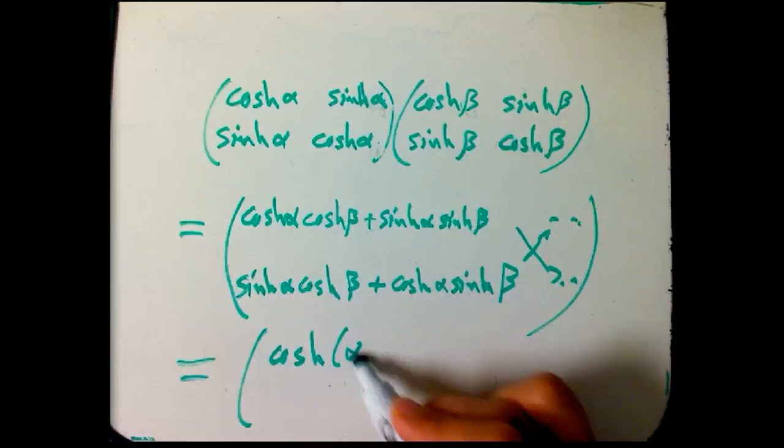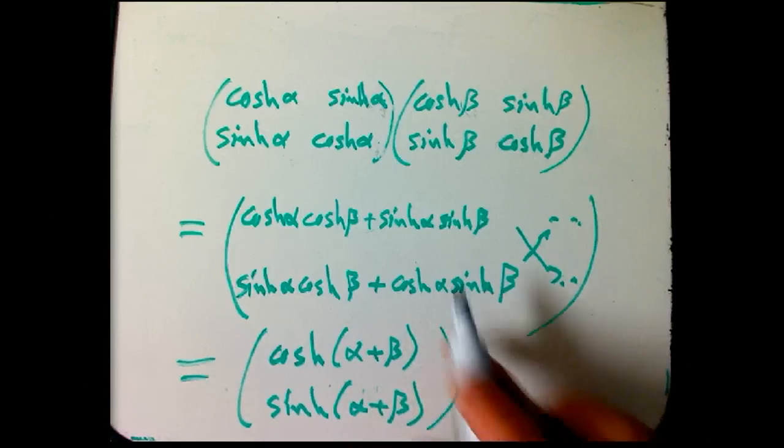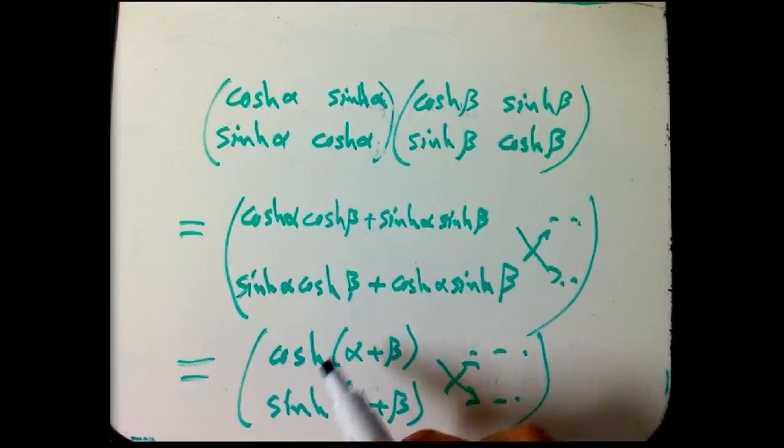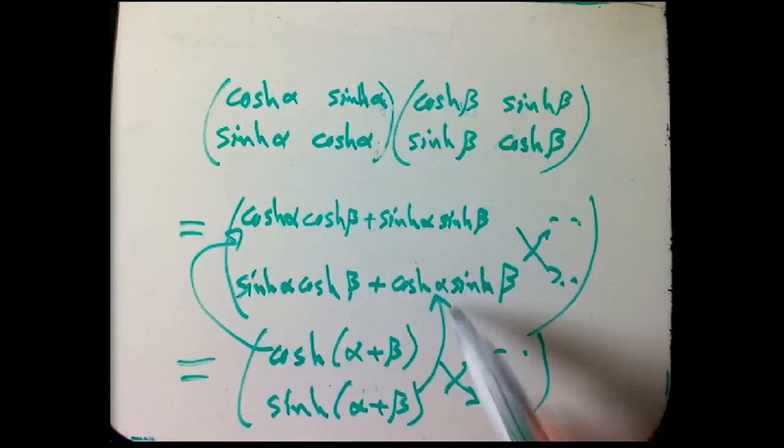So the claim is that this is cosh, and I've really proved this, if you unravel everything I've done, it amounts to a clever proof, oh, and then, of course, same thing, but switched. A clever proof that cosh alpha plus beta really is this, and sinh alpha plus beta really is this.